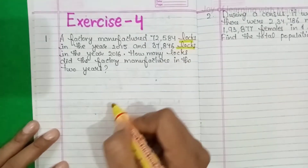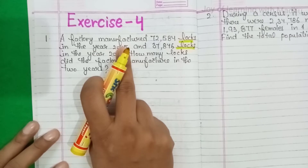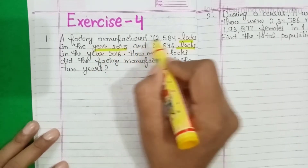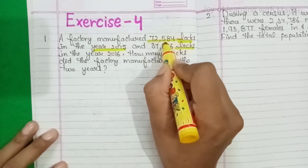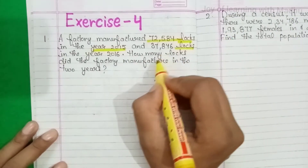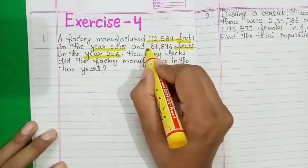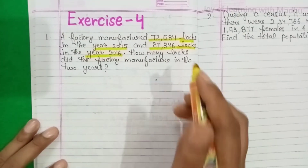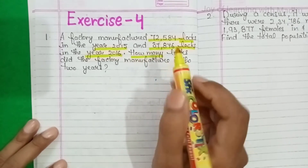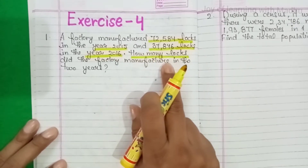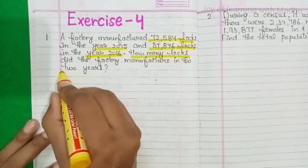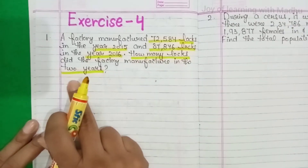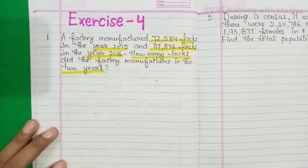इस question में ताला (lock) के बारे में है। एक factory है जिसमें locks बनाये जाते हैं। Year 2015 में 72,584 locks बने और year 2016 में 37,846 locks बने। Question में पूछा गया है: how many locks did the factory manufacture in the two years?